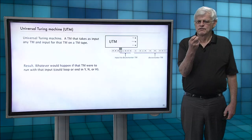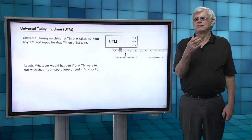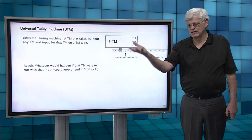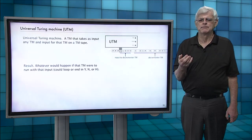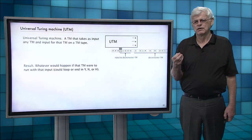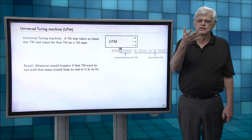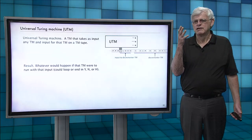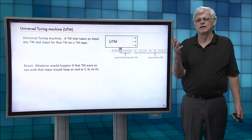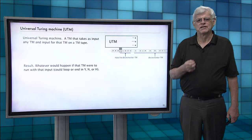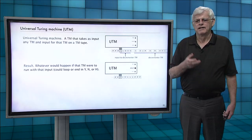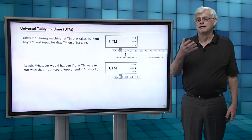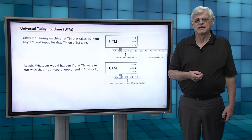And then what the universal Turing machine does is leave on the tape precisely what the Turing machine that's on the tape would leave on the tape if it were run on that input. Or if that machine loops, the universal Turing machine would loop or ends in yes, no, all. It would do exactly what the Turing machine that's on the tape would do. In this case, it would wind up decrementing the number input by one and blanking out the rest of the tape.